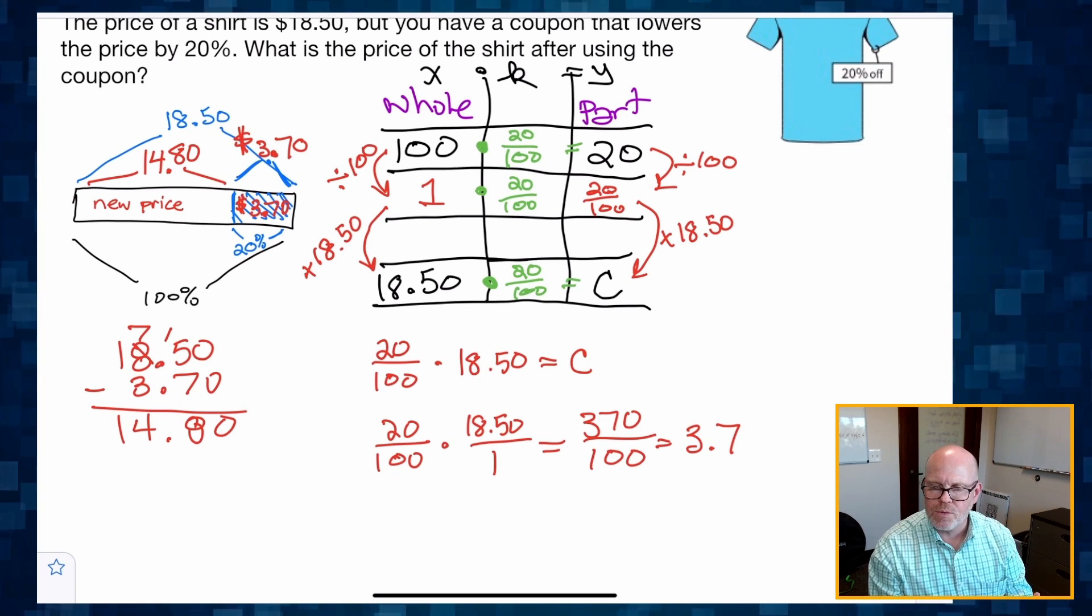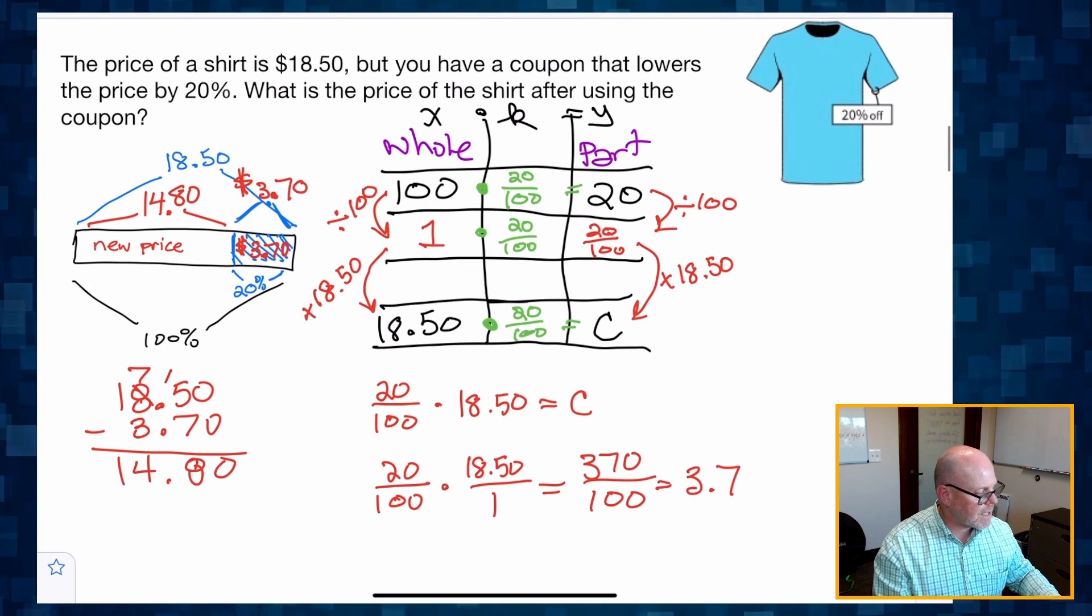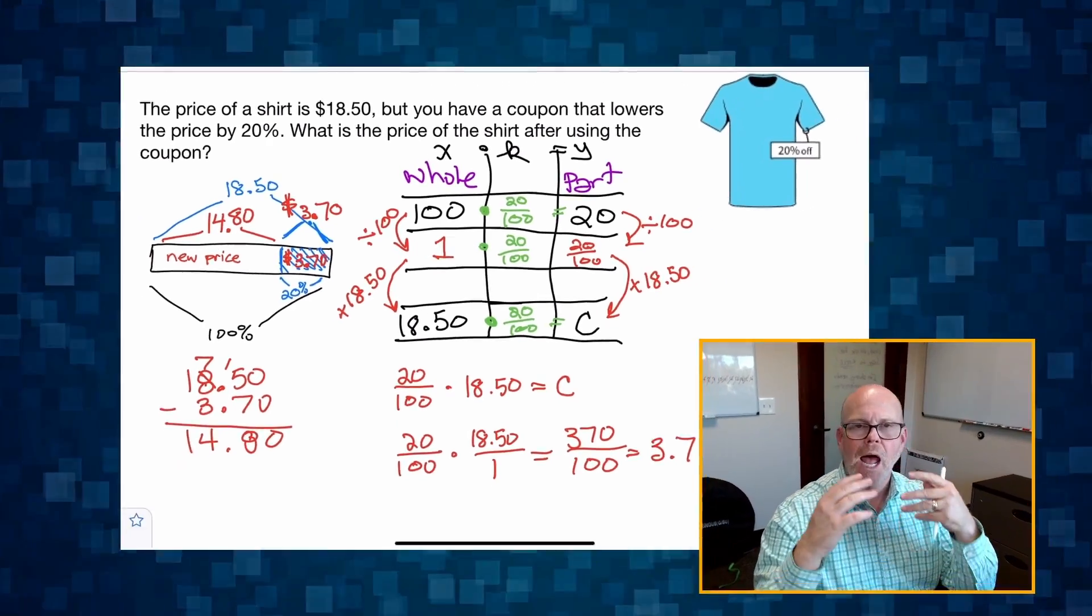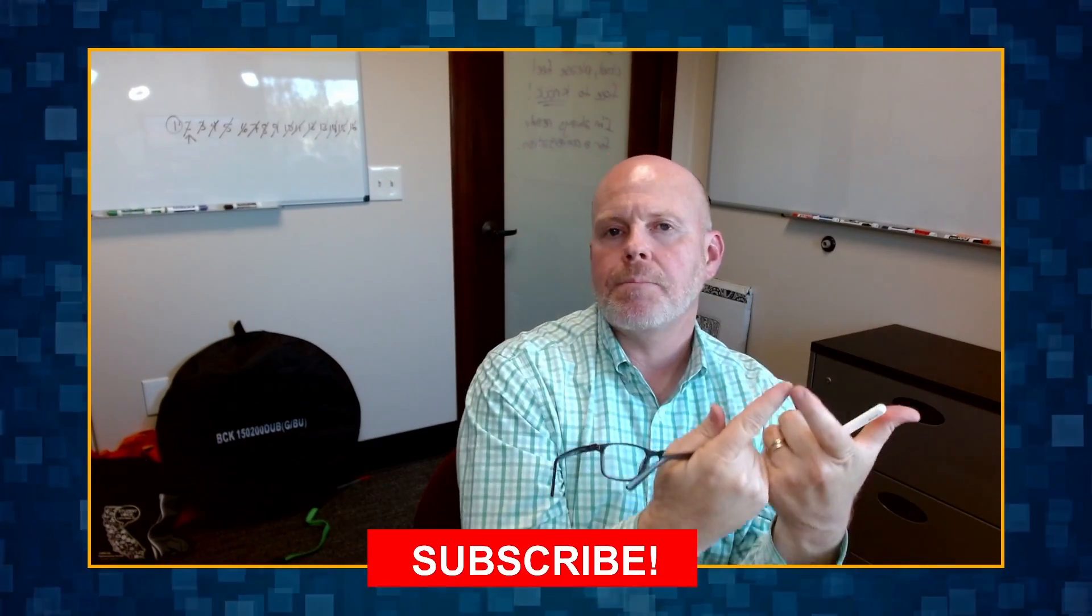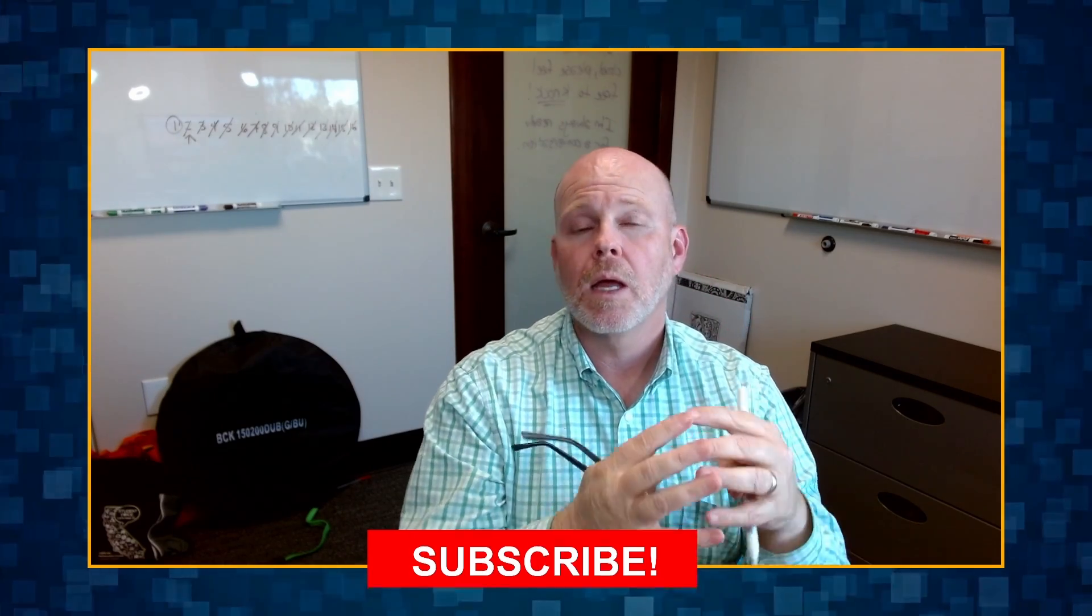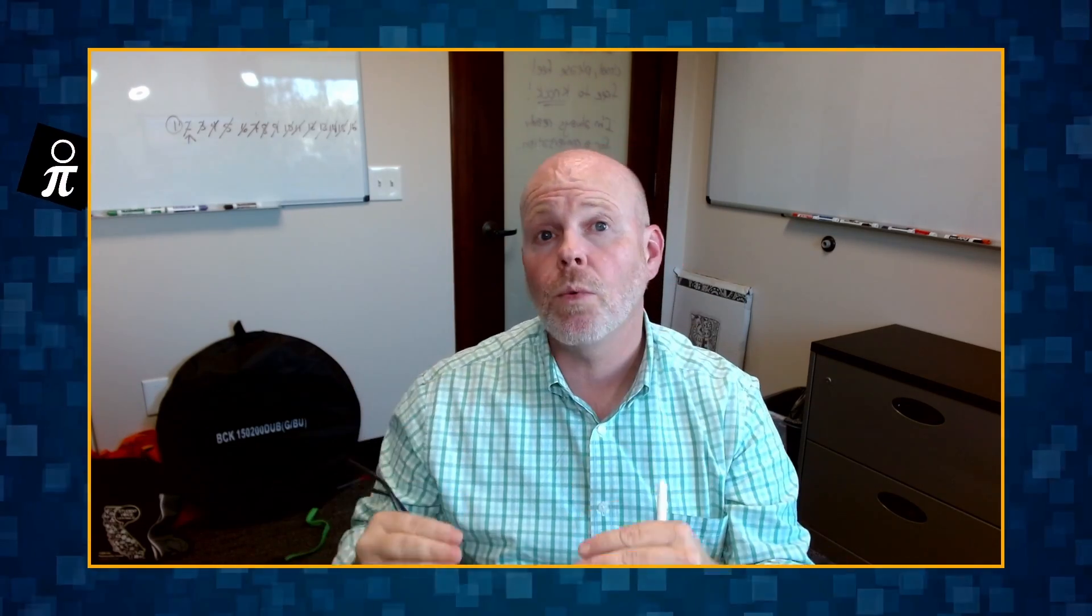There's other ways we could have solved this problem. But right now, the key is for me to show you how to use a tape diagram to model your understanding of the problem. Take that understanding of the tape diagram and write a bunch of equivalent ratios in the table, and then use whatever table manipulation you want to get to that answer.